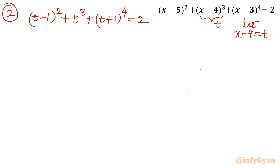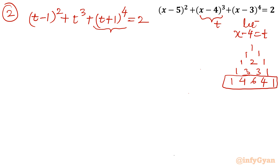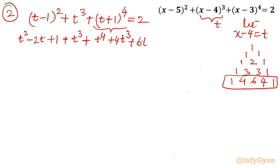In this substitution the powers are not symmetric, so we need to use Pascal's triangle. The coefficients for power 4 are: 1, 4, 6, 4, 1. Expanding (t+1)⁴ in descending order: t⁴ + 4t³ + 6t² + 4t + 1. And (t-1)² = t² - 2t + 1.